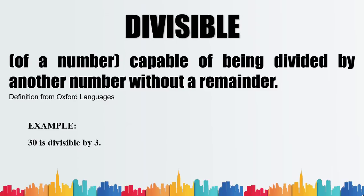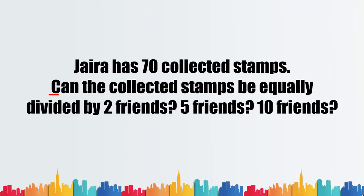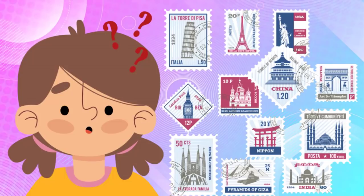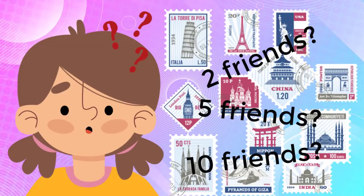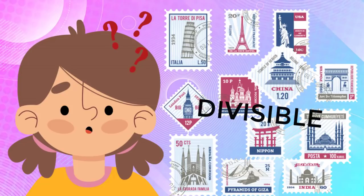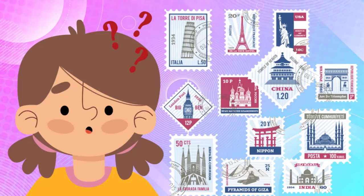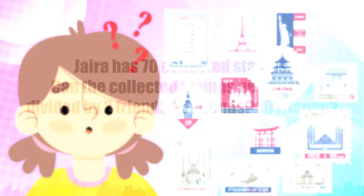Going back to our problem, it was asked: can the collected stamps be equally divided by 2 friends, 5 friends, or 10 friends? We can justify that the total number of stamps, which is 70, can be equally divided into 2, 5, or 10, if we can prove that these numbers are factors of 70 — that is, 70 is divisible by 2, 5, or 10. To know if the numbers are divisible by 2, 5, or 10, we will use these divisibility rules.